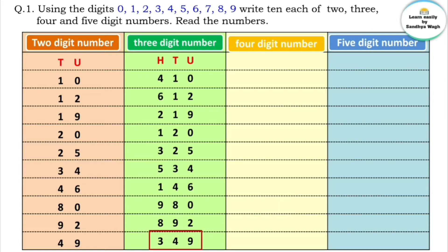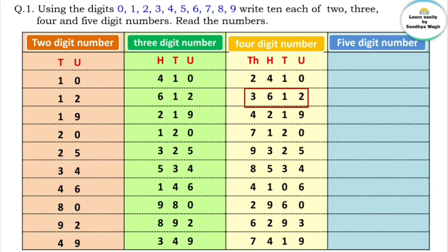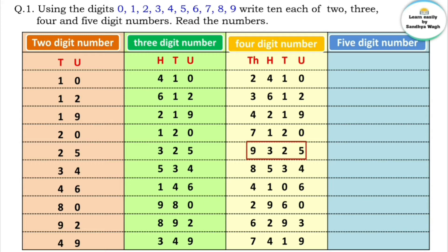Now let's make four-digit numbers. The places are units, tens, hundreds, and thousands. The numbers are: 2410, 3612, 4219, 7120, 9325.